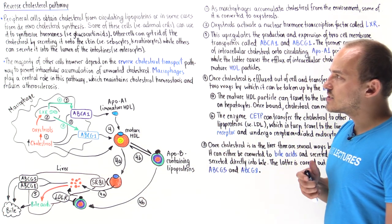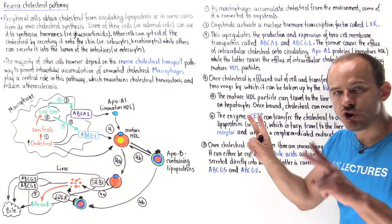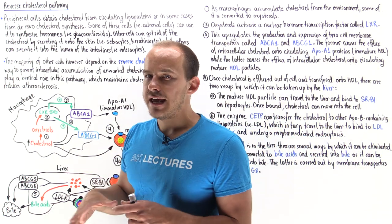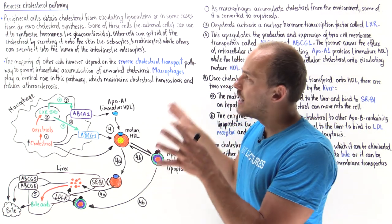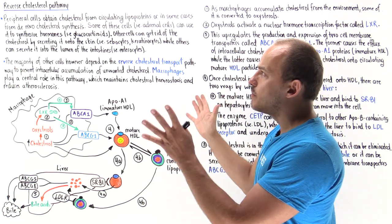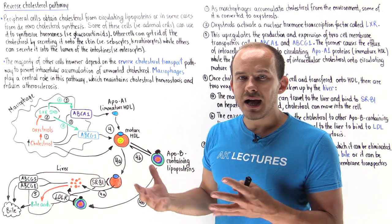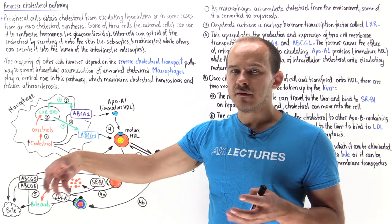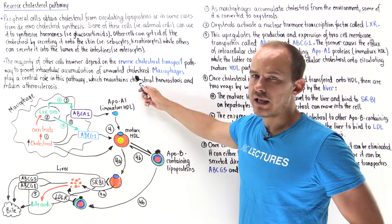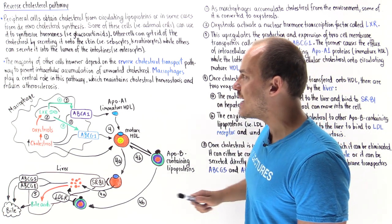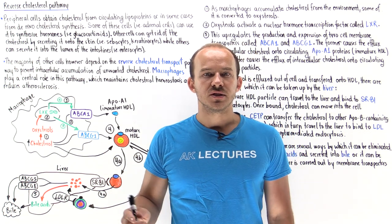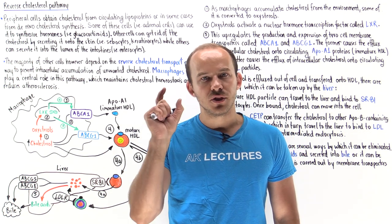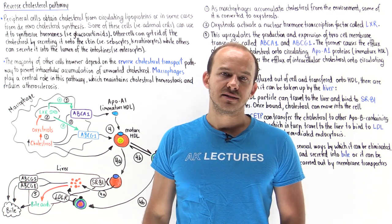To summarize, we see that HDL particles, the good cholesterol, and macrophages play a central role in this reverse cholesterol transport pathway. This is the pathway that allows the majority of the peripheral cells of the body to rid the cell of any unwanted extra cholesterol. This helps maintain cholesterol homeostasis and reduces the risk of developing atherosclerosis—the buildup of cholesterol plaque within blood vessels of the cardiovascular system.